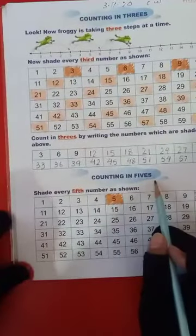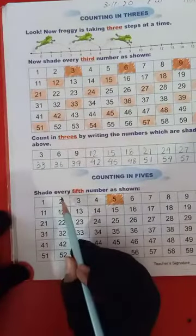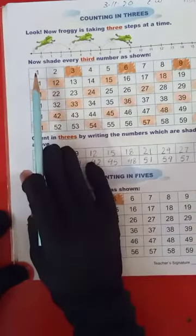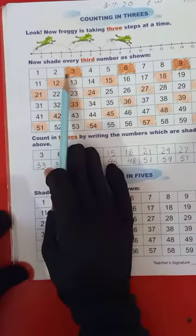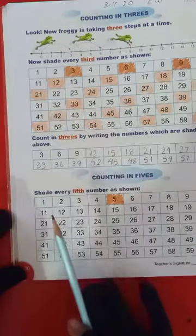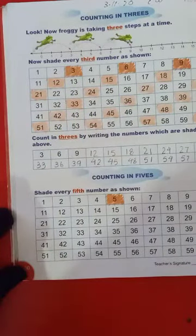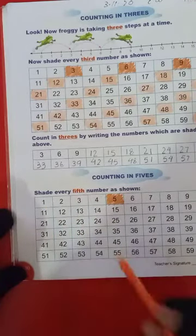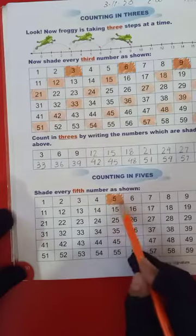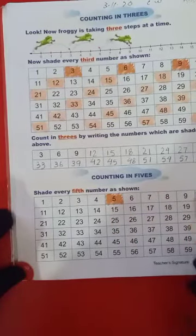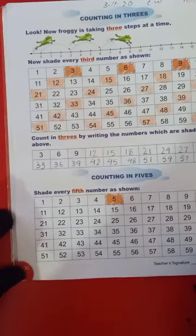Now, counting in fives. Shade every fifth number as shown. Jaisi humne oopar har tisare number pe color kiya tha — every third number pe color kiya tha — now we shade every fifth number. Like 1, 2, 3, 4 and shade it on number 5.